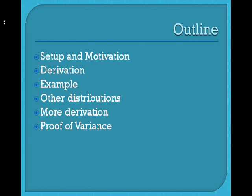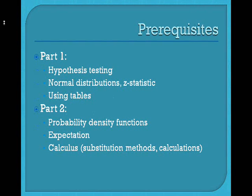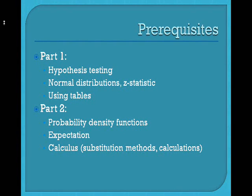We'll talk about a basic derivation and follow through one example. We'll then get into a little more complicated material, talking about how this is actually related to other distributions, find some more complicated derivation and proof of it, as well as definitely give a proof of the variance of the student's t-distribution. So this particular talk will basically be broken up into two parts, part 1 and part 2.